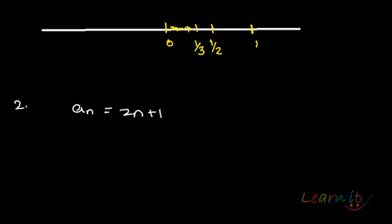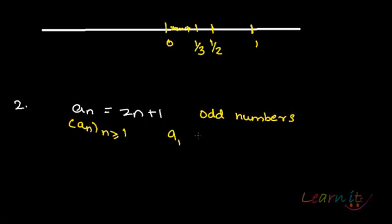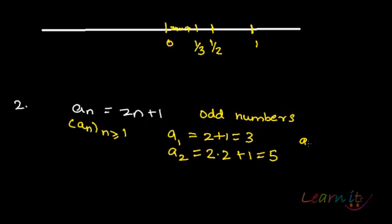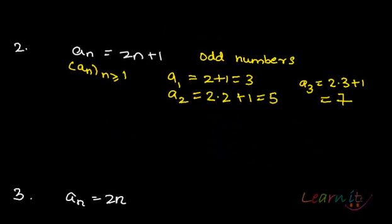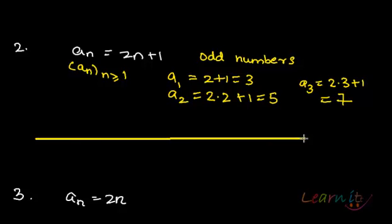Similarly, you can also have another sequence — say the sequence of odd numbers, which are denoted by 2n+1. So for this sequence where n is greater than or equal to 1, if I start putting values: a_1 equals 2(1)+1 = 3, a_2 equals 2(2)+1 = 5, a_3 equals 2(3)+1 = 7, and so on and so forth. This will be a sequence of all odd numbers starting off with 3.